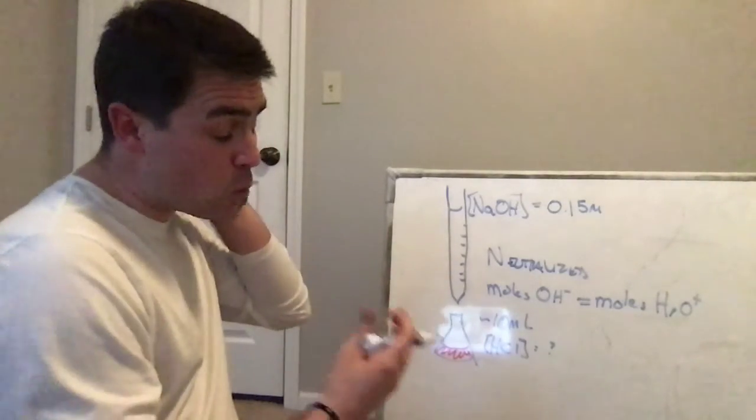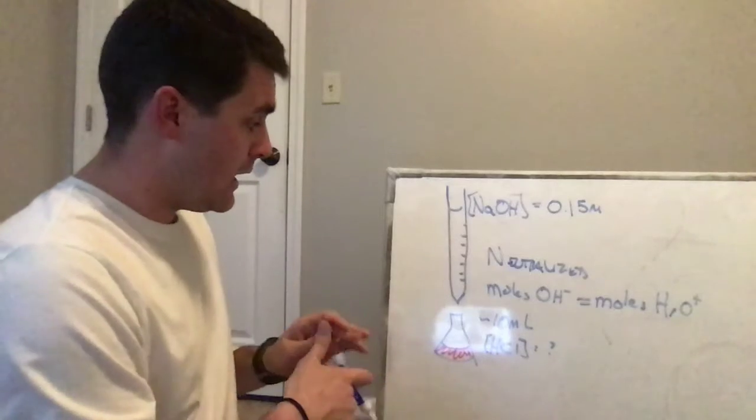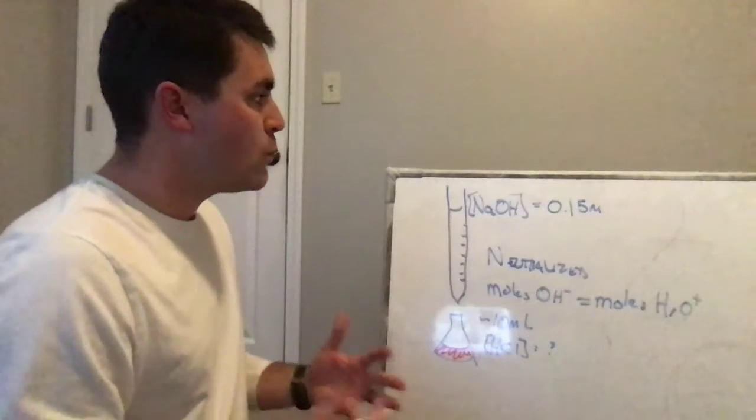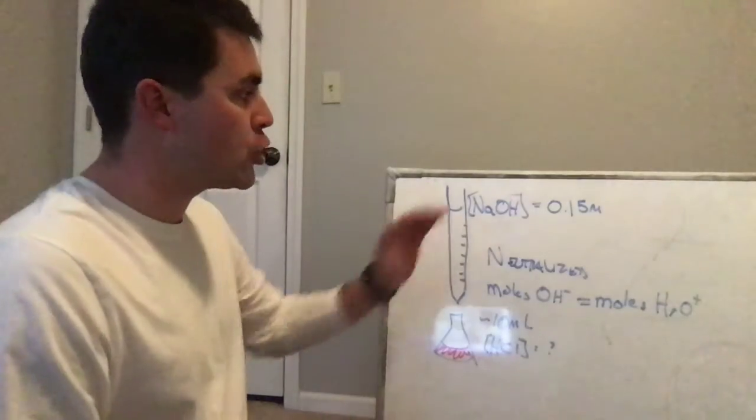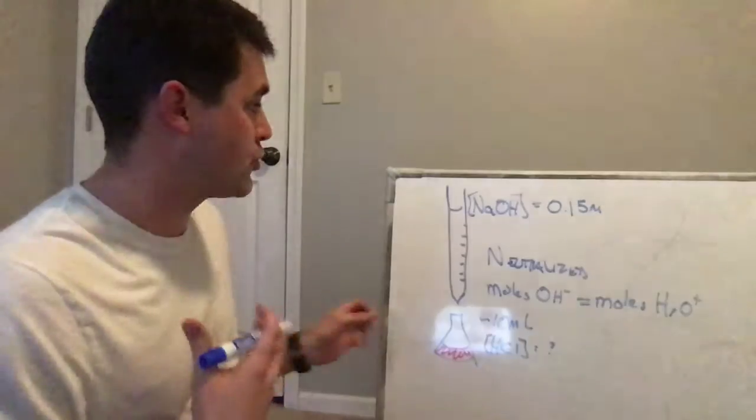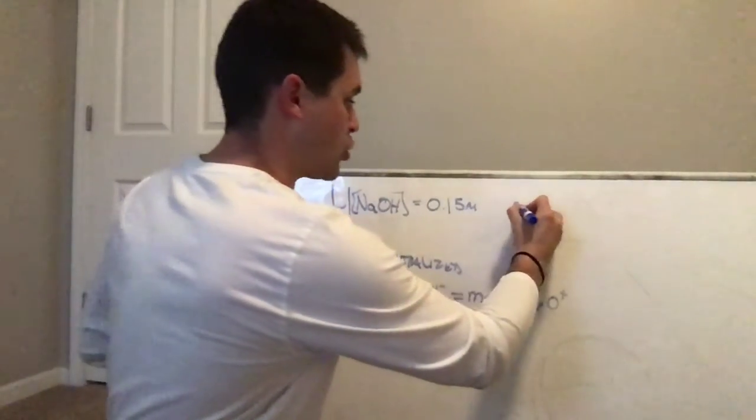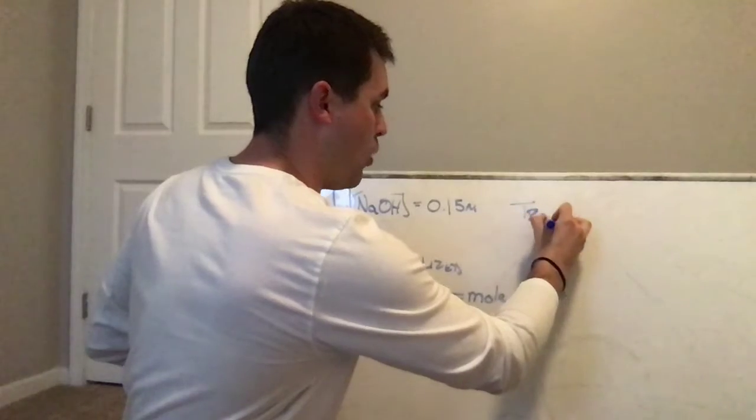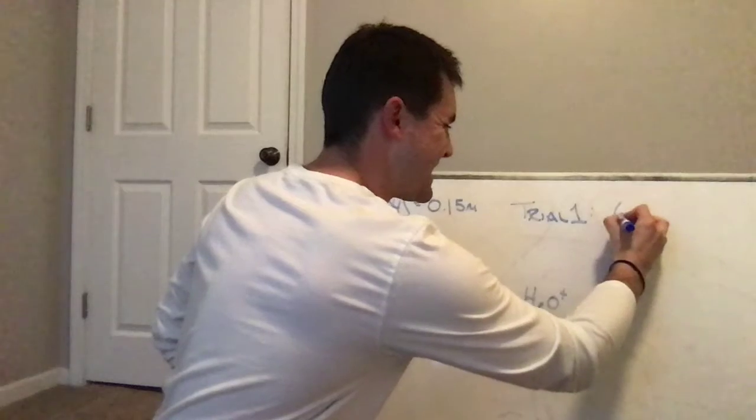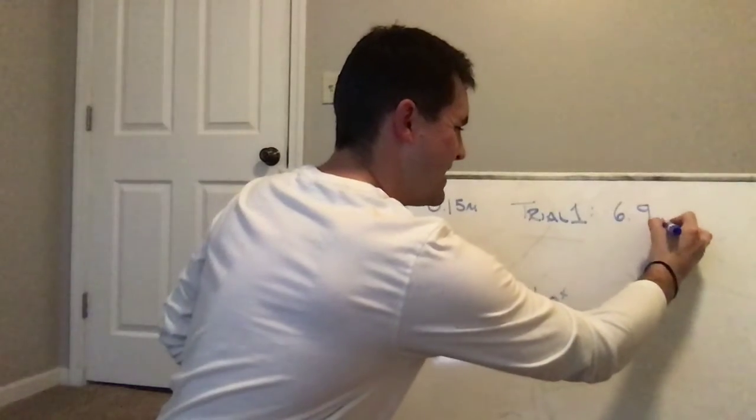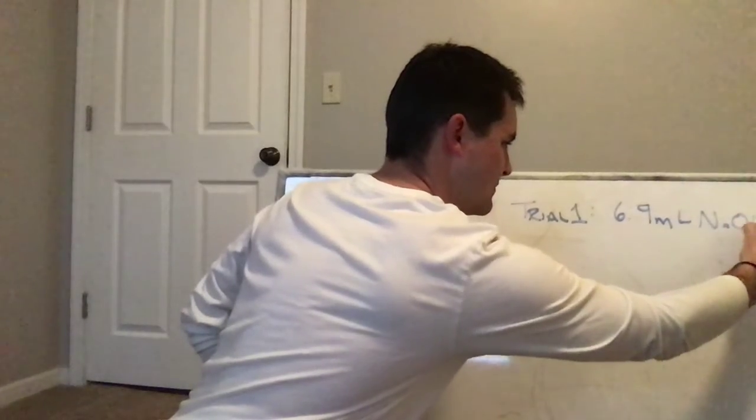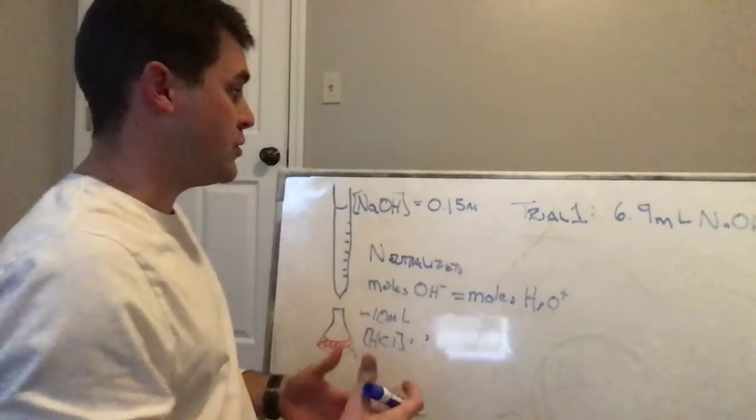So this was the question. How are we able to predict the concentration of HCl from this? Well, we first had to figure out how much sodium hydroxide we had added. So let's go ahead and take one of our trials. I'm going to take a random trial and say, I'm going to call it trial number one. Let's say for trial one, we used approximately 6.9 milliliters of NaOH. This was our amount that we used.